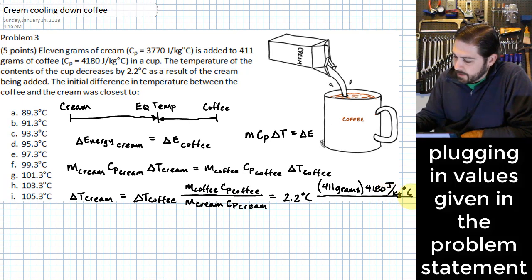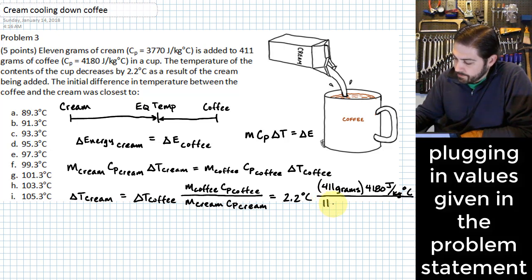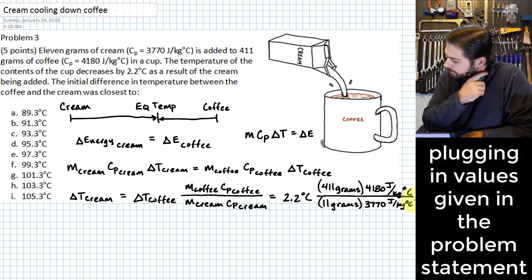Next, we're going to put in the mass of the cream—we have 11 grams for the mass of the cream—and we have for the specific heat of the cream 3770 joules per kilogram degrees C.